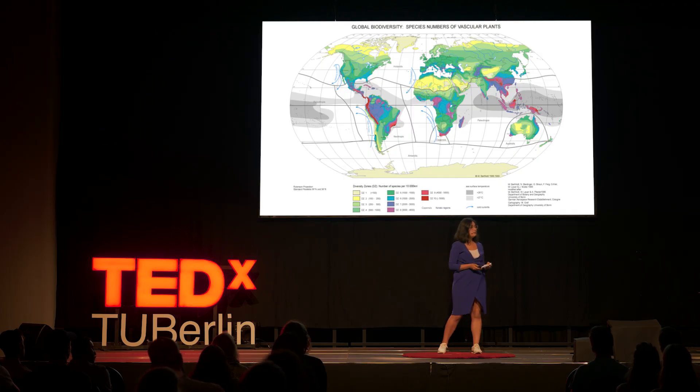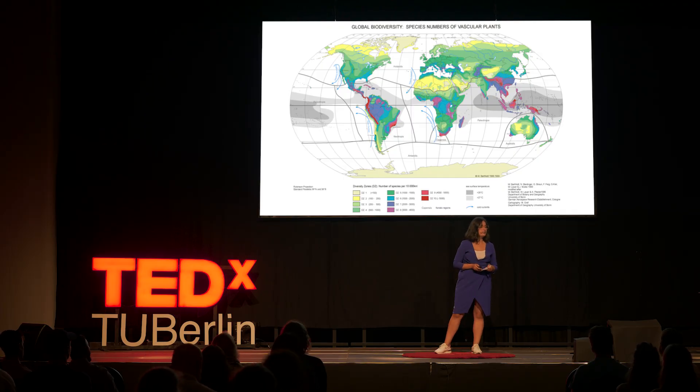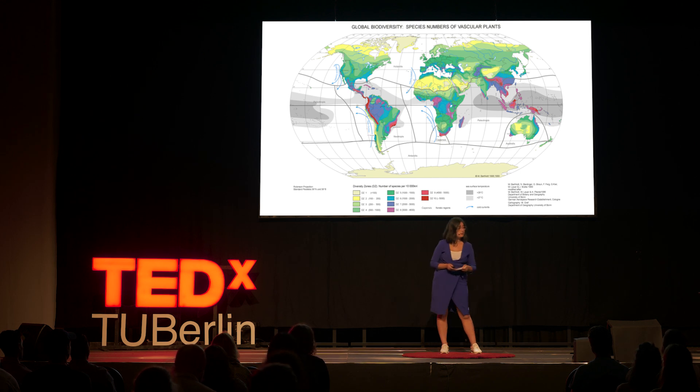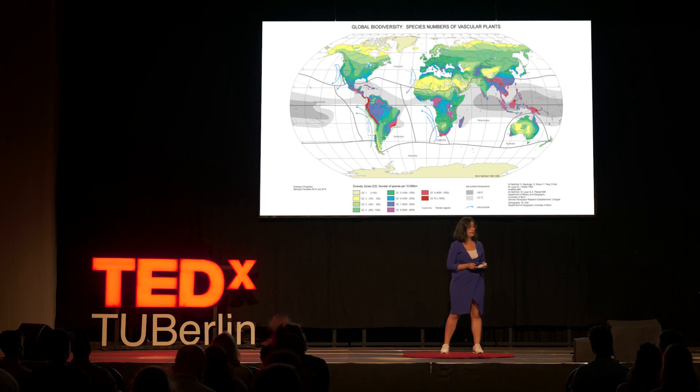Biodiversity, or the variety of animal and plant life in a given habitat, is unevenly distributed all around the world and shows distinct trends. As we can see, it is highly concentrated in Central Africa, in the Neotropics, the Amazon Basin, South and Southeast Asia, and the Pacific region.